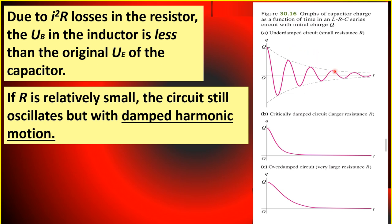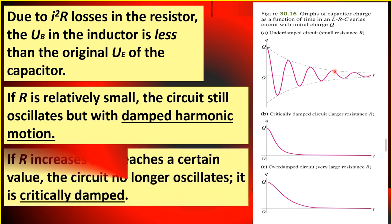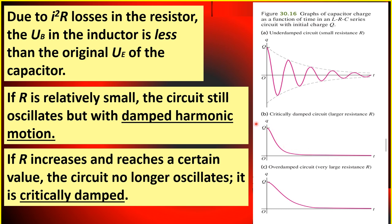For still larger values of R, the circuit becomes what we call overdamped. If R increases and reaches a certain value, the circuit will no longer oscillate — we say that it is critically damped, as shown in part B of the figure. As you can see, there is no more oscillation; there is a sudden decrease in the charge until it becomes zero.